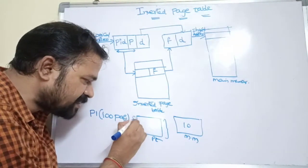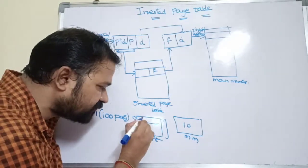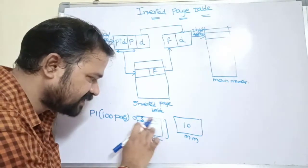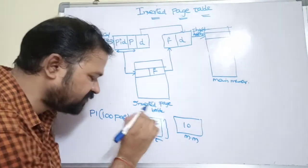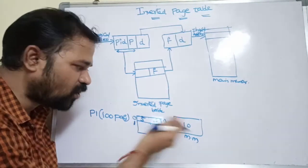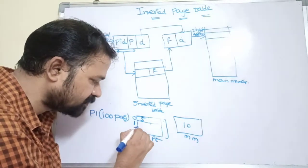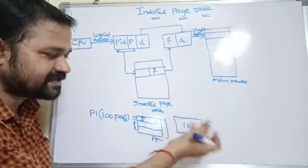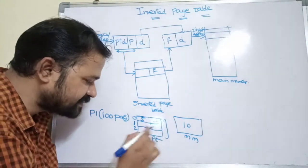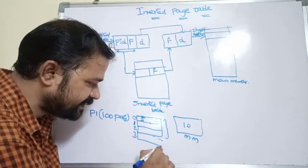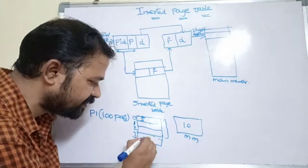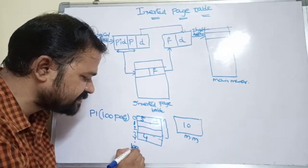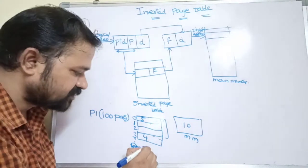Suppose the first page number is 0 and it resides in the 5th frame, with a valid or protection bit. Page 0 maps to the 5th frame. The 1st page is not available in main memory, so it is empty. The 2nd page also doesn't reside in main memory. The 3rd page is available in frame number 4. Likewise, the page table contains all 100 pages' information.